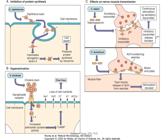Vibrio cholerae also has a toxin, but a different one. It attaches to ganglioside receptors on intestinal cells, is taken in, and increases adenylate cyclase activity. This raises cyclic AMP levels, causing loss of electrolytes and severe diarrhea. That is the primary pathogenic mechanism for cholera. Treatment focuses less on the toxin itself and more on fluid and electrolyte replacement.